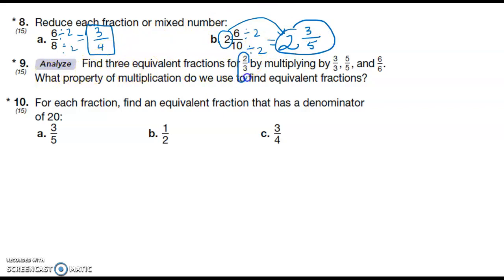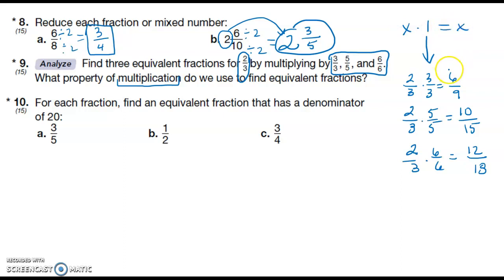Number nine: Find three equivalent fractions for 2/3 by multiplying by 3/3, 5/5, and 6/6. What property of multiplication do we use? Times 3/3: two times three is six, three times three is nine. 2/3 times 5/5: two times five is ten, three times five is fifteen. And then 2/3 times 6/6: two times six is twelve, three times six is eighteen. These are all different forms of one, and when I multiply anything by one I get the same thing. If I were to reduce all of these fractions it would just go back to 2/3. So this is the identity property of multiplication.